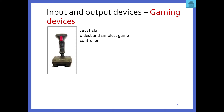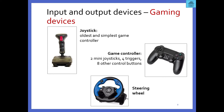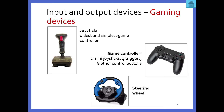Then we have gaming devices — things like joysticks and game controllers. Those are also input devices because when you click on a trigger, move the stick, or click the buttons, it sends an instruction to the computer or console as to what to do. Even a steering wheel when you're playing games — you are giving instructions to that device.